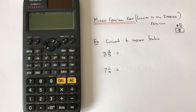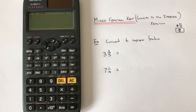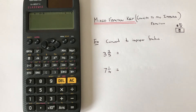Hi guys, welcome back, this is Maths 3000. Today I'm going to show you how to use the mixed fraction key and use it to convert it into an improper fraction on a Casio Classwiz scientific calculator.